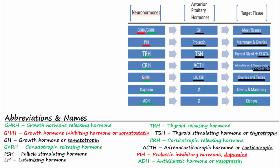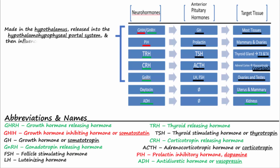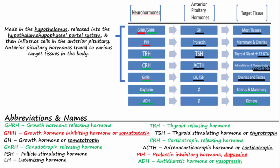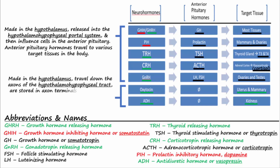Levels of these hormones are regulated by negative feedback loops, and learning them is important to understand how blood levels of these hormones can change with certain pathological conditions. In summary, remember the neurohormones that are made in the hypothalamus and act on cells of the anterior pituitary. These anterior pituitary hormones then influence target tissues in the body. Oxytocin and ADH are made in cell bodies in the hypothalamus but are released from the posterior pituitary axon terminals into the blood to then travel to their target tissues.